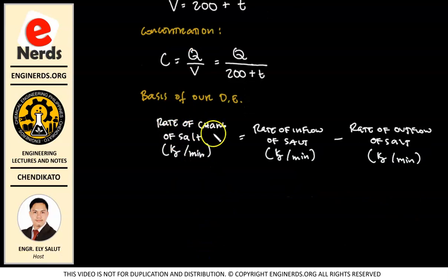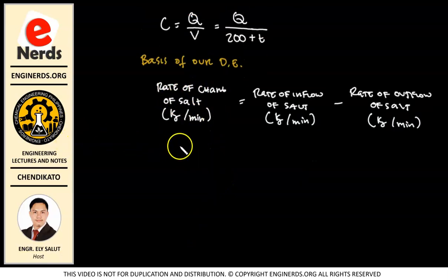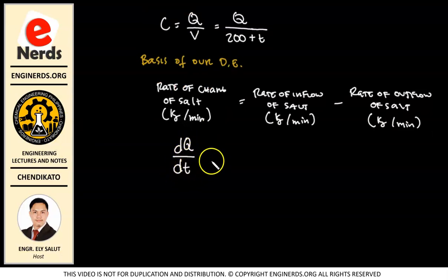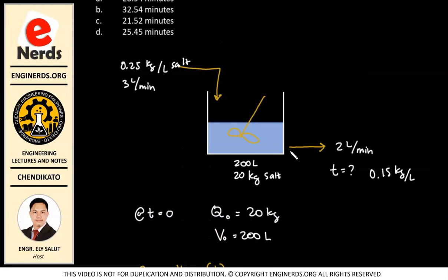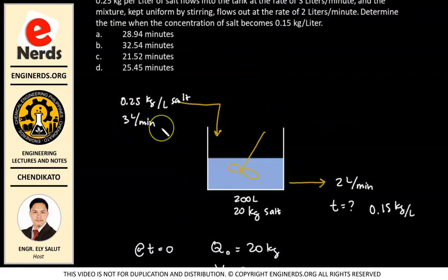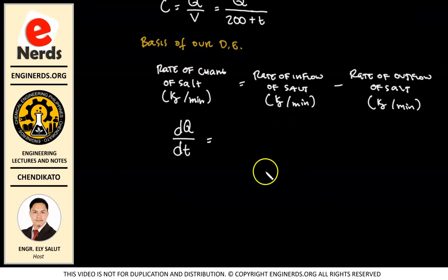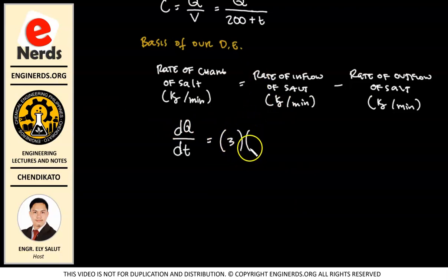The rate of change of Q with respect to time: the rate of inflow is given and doesn't change — brine flows in at 3 liters per minute with a salt concentration of 0.25 kg/L. So the rate of inflow of salt is 3 liters per minute times 0.25 kilogram per liter.